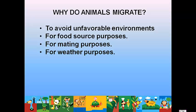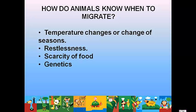Animals also migrate for weather purposes — if it gets too cold, they migrate to a warmer area for the winter and usually return in the summer. How do animals know when to migrate? Some can sense temperature changes and changes of season. Animals near the equator where weather doesn't change much become restless and migrate. Scarcity of food also triggers migration — if an animal is running out of food, it will migrate to new areas.